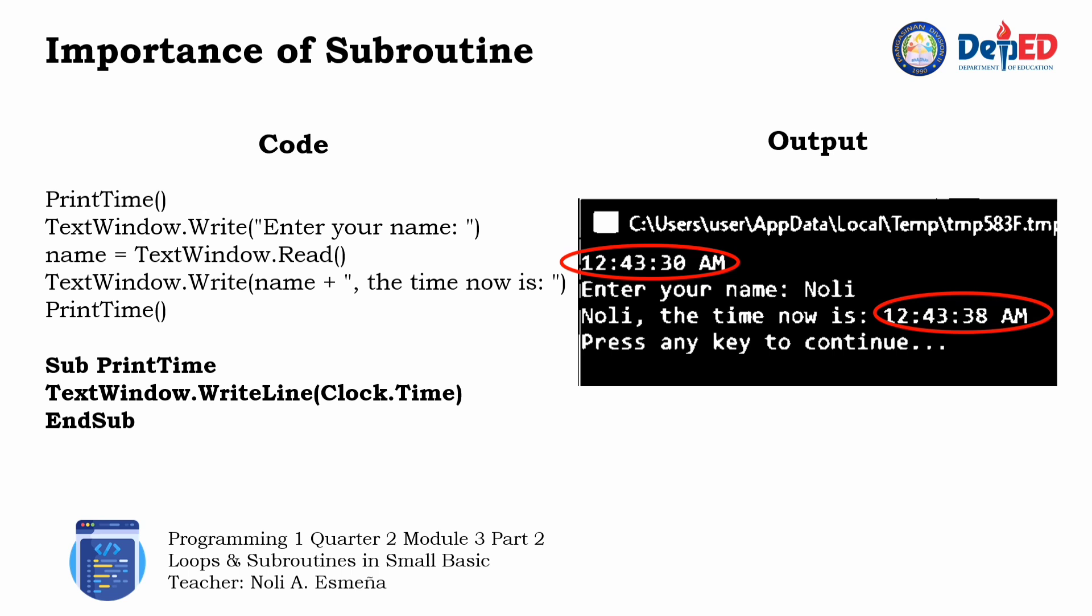Well, in fact, we only made one subroutine that displays time. This is because this subroutine is called two times on the main program. See, instead of typing the three lines of code to print the time on each part of the program, the subroutine print time is just called, making it easier for a programmer to print the current time multiple times along the program.